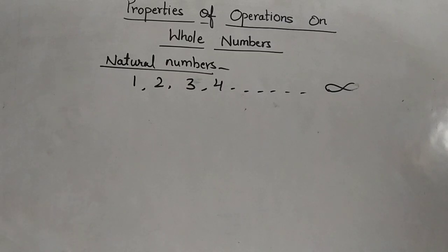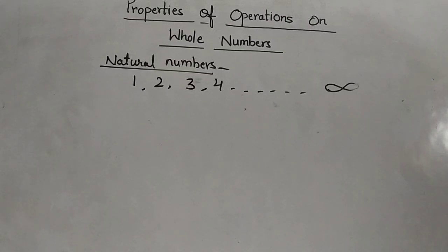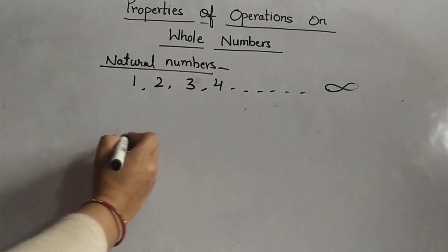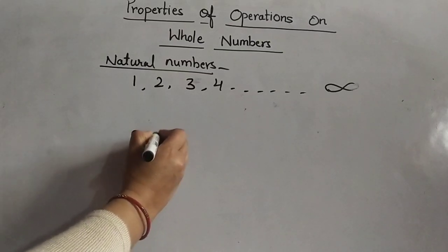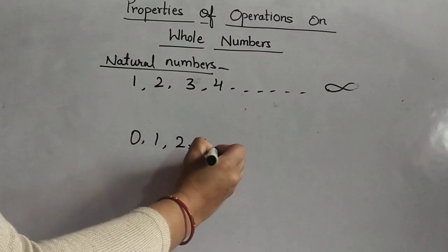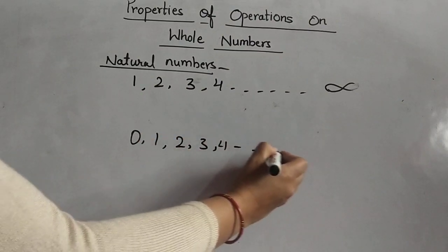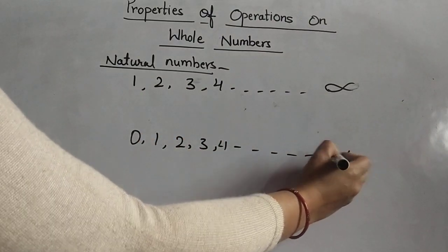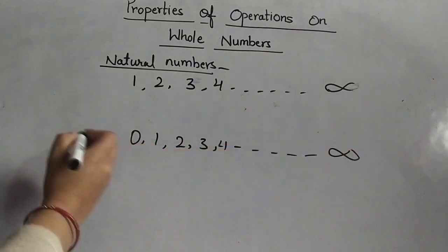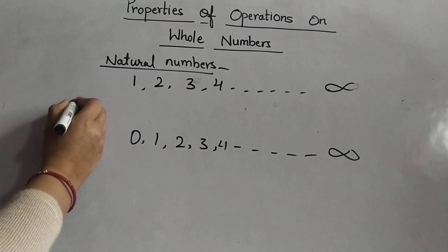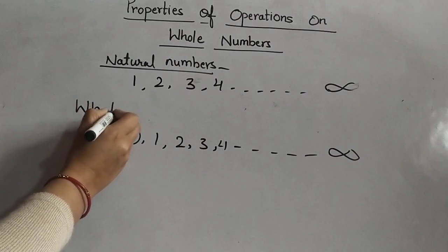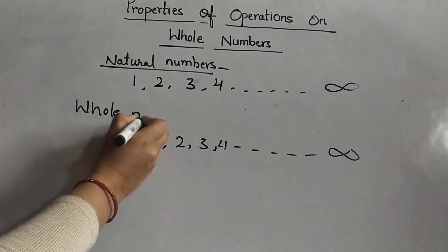Now, if we include 0 in the set of natural numbers, we have the set of whole numbers. That means 0, 1, 2, 3, 4, and so on — these are all called whole numbers.